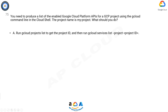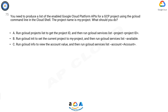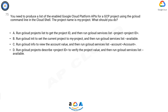A: Run CloudProjects list to get the project ID and then run CloudServices list --project project ID. B: Run CloudInit to set the current project to MyProject and then run CloudServices list --available. C: Run CloudInfo to view the account value and then run CloudServices list --account account. D: Run CloudProjects describe project ID to verify the project value and then run CloudServices list --available.